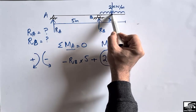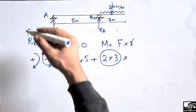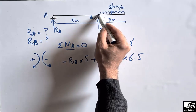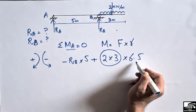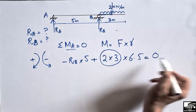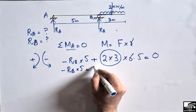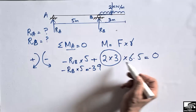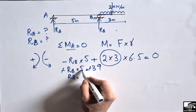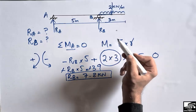The 1.5 m is half of the 3 m distributed length, and 5 m is the distance from support B to point A, giving a total moment arm of 6.5 m. Setting the sum of moments at A equal to zero and solving, we get RB × 5 = 39, so RB = 39 ÷ 5 = 7.8 kN.